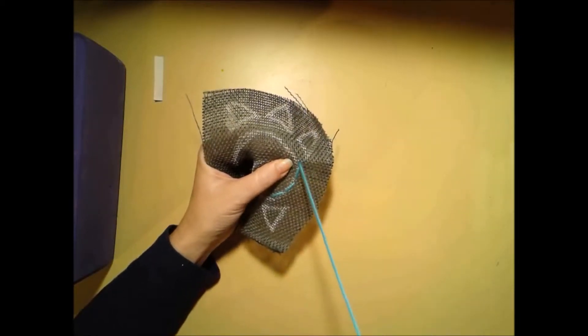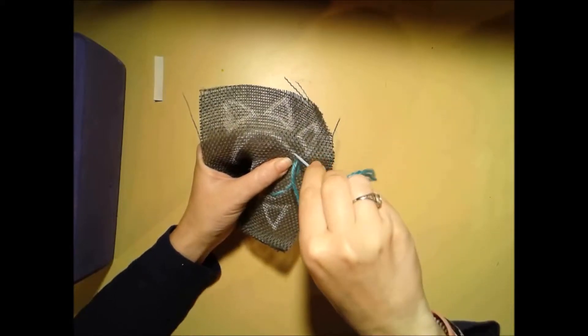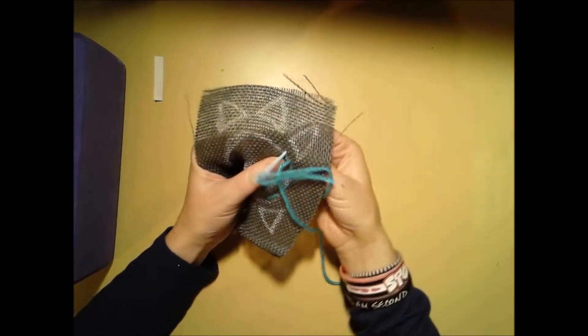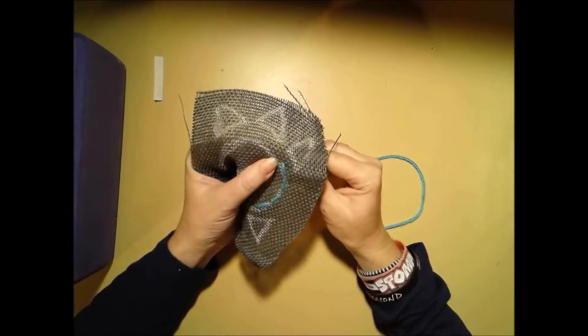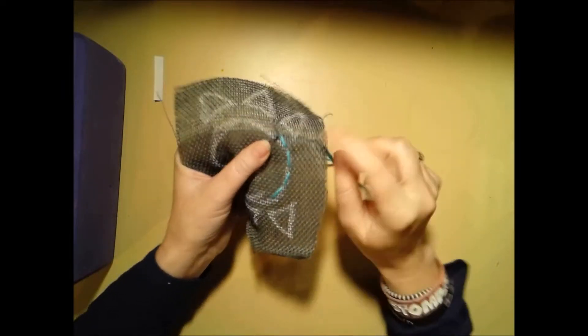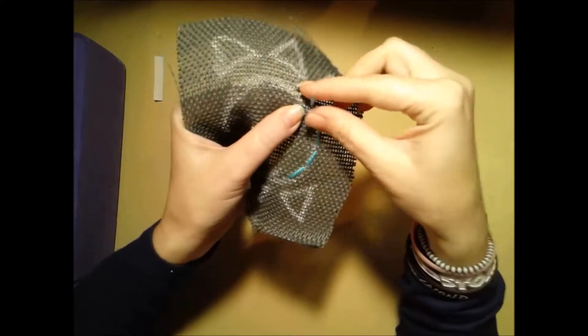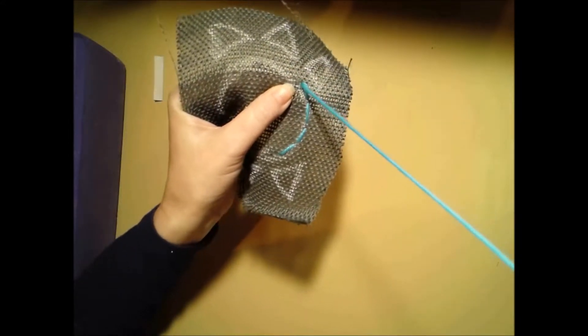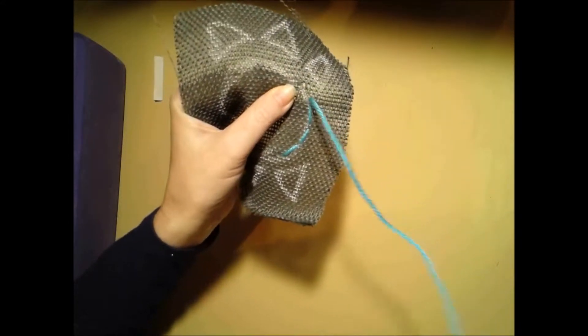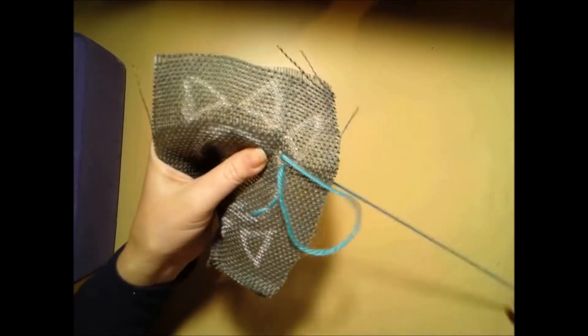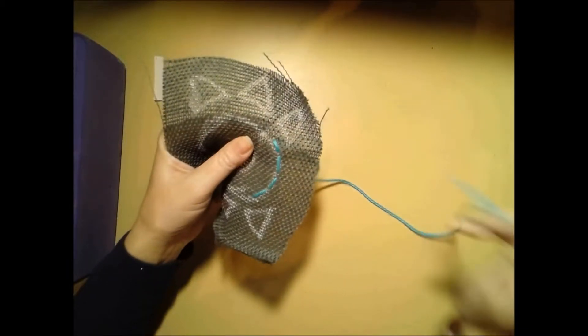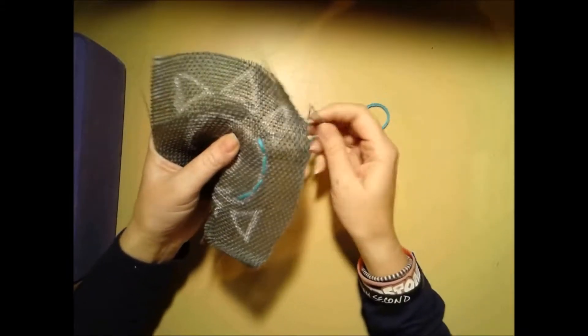This is called a running stitch, and we just go down and up. Up, and then back down. Now if you're not careful and you go through the same hole, watch what happens to the stitch right here. If I come through the same hole again, the stitch undoes itself. So you need to make sure you're going through a different hole every time.